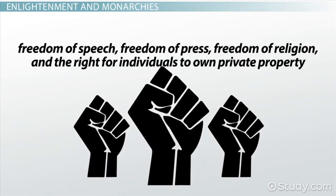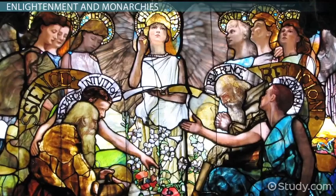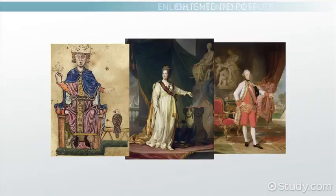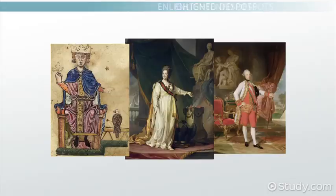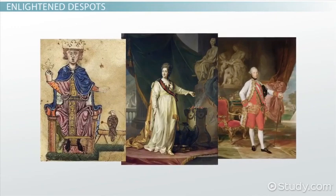The enlightened despots tried to institute Enlightenment reforms but kept all of the political power without creating a constitution. In general, enlightened despots allowed freedom of speech, freedom of press, freedom of religion, and the right for individuals to own private property. They often supported art and education and reasoned that the overall welfare of the people benefited them as monarchs. Although many monarchs across Europe tried systems of enlightened absolutism, three stand out as the most exemplary.